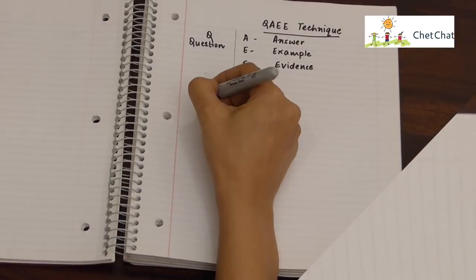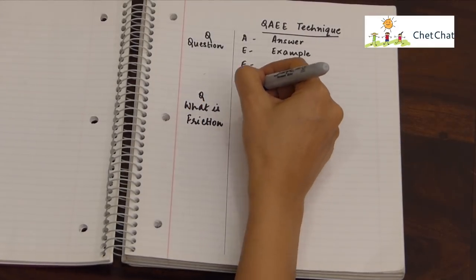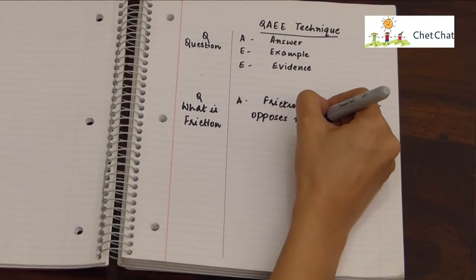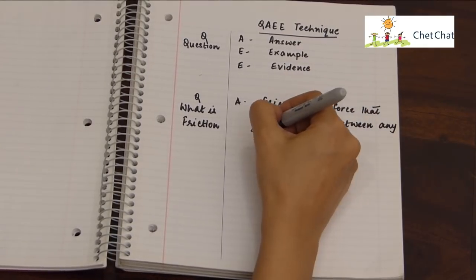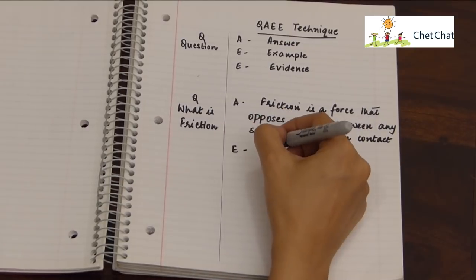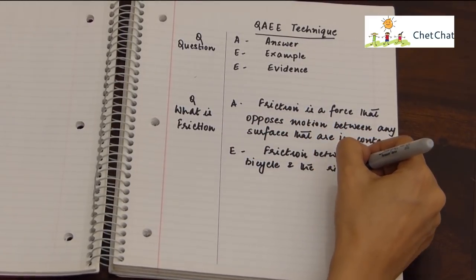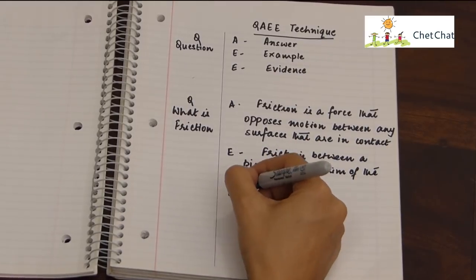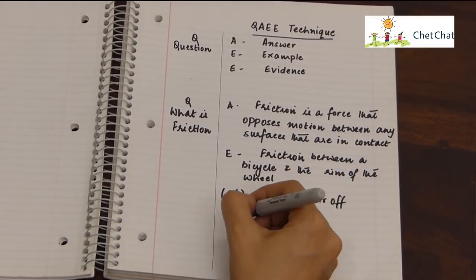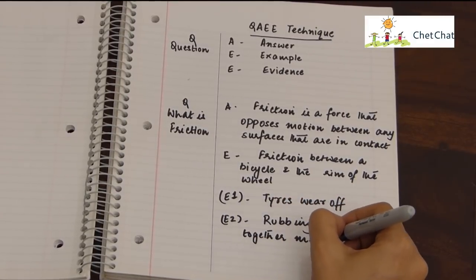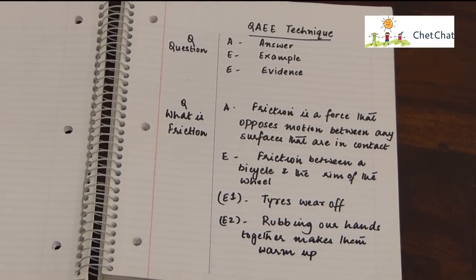For example, in a physics class with an introductory lecture on friction: we start writing that friction is a force that opposes motion between any surfaces that are touching. As the teacher gives examples and evidence about friction, we put all of that down. When she asks that question in the exam, your answer is already exam-ready.